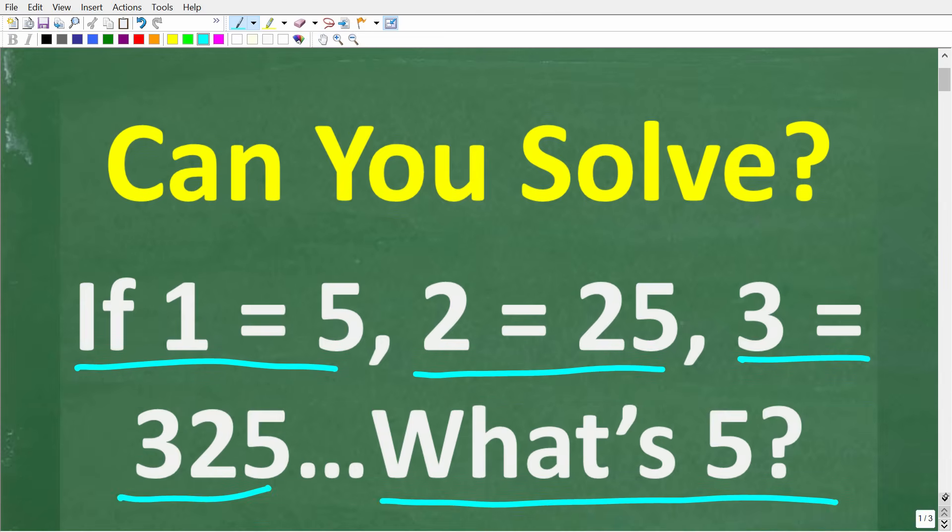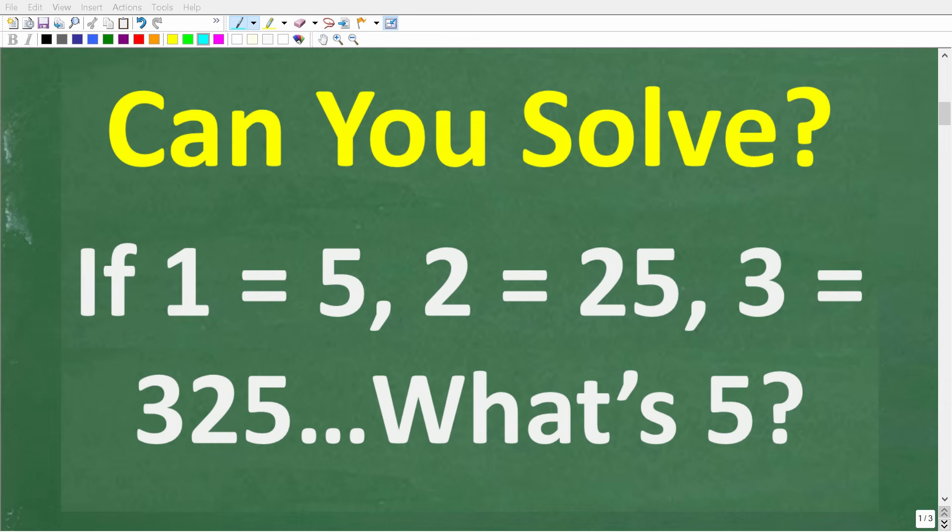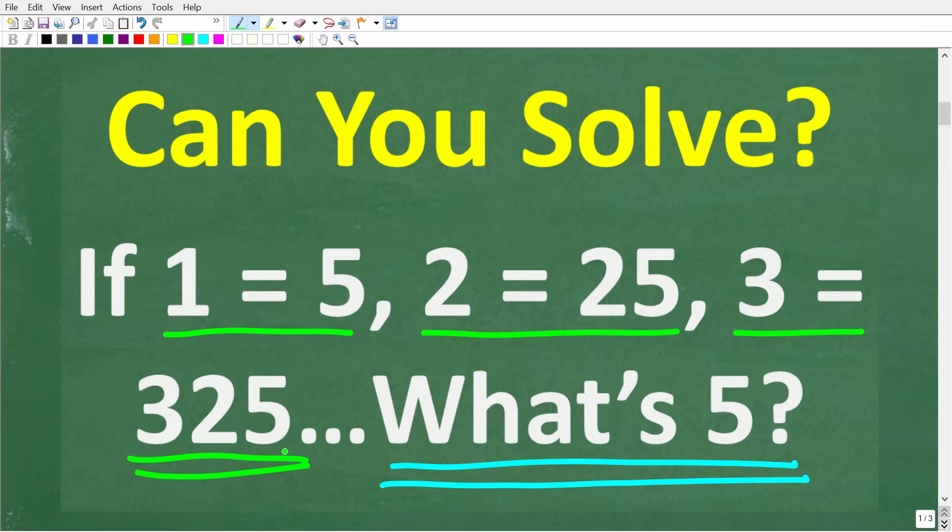Okay, so one more time. If 1 equals 5, and 2 equals 25, and 3 equals 325, what is 5? All right, so here is our problem. And again, we have some sort of pattern. And the question is, what is 5? Well, we can't answer this question unless we understand the pattern. So 1 is equal to 5, and 2 is equal to 25, and 3 is equal to 325. So we need to look at this pattern and try to figure it out.